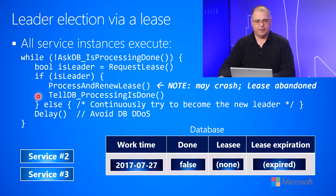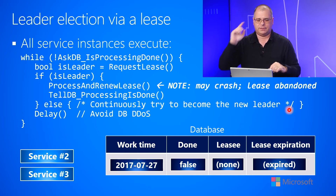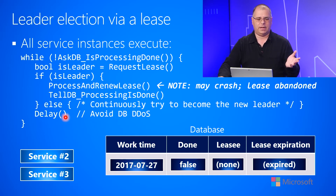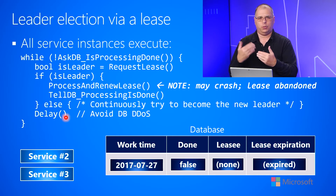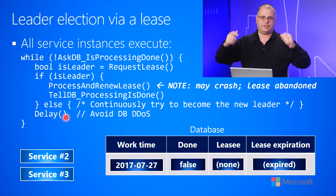When the lease has expired, the other instances that were not leaders go into the else branch — I just have a comment there that says 'continually try to be the leader.' They don't actually do anything in the else; instead, they execute a delay. This is to avoid a distributed denial-of-service attack against the database by having all instances constantly pounding on it requesting the lease. The delay spaces out the requests.